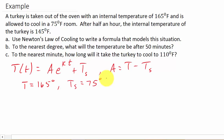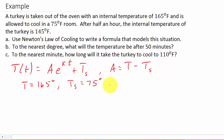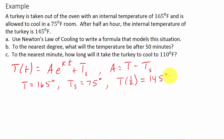After half an hour, the internal temperature of the turkey is 145 degrees. What information does that give us? Well, t is time. So if we plug one half in for little t and evaluate this, we should get 145 as an answer. That tells us T of one half — because that's the half-hour time — is equal to 145 degrees.